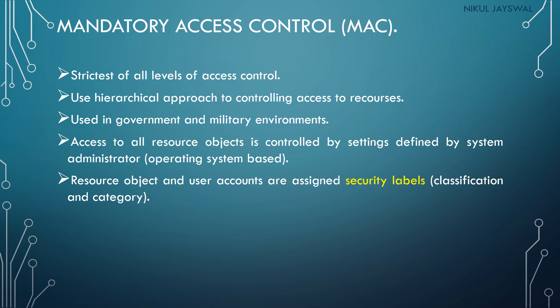All files have security labels with classification and category, and all users also have security labels. When a user wants to access a file, the access control mechanism compares the labels of the file and user. If the comparison is positive, access is granted; if negative, it is denied. A major disadvantage of MAC is that all labeling of files and users must be configured before the system can be used.